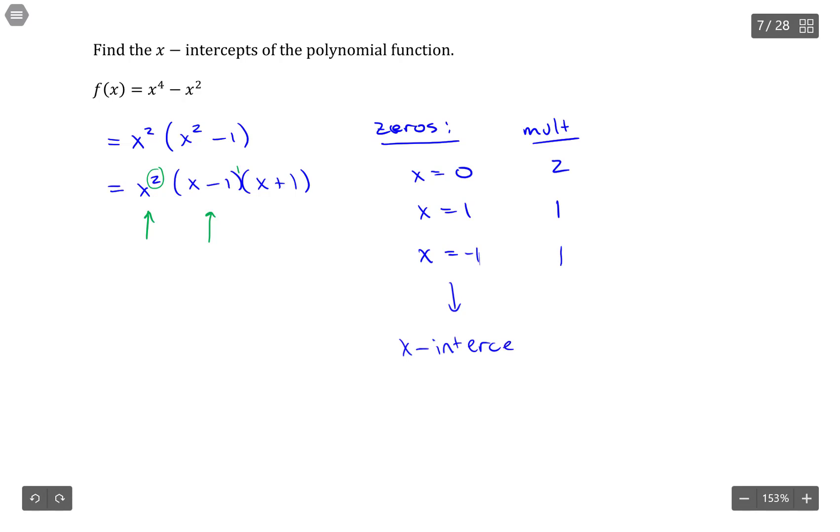If we had had any solutions that were non-real, so they involved plus or minus i, those don't get counted as x-intercepts because they're not real values. Only real zeros qualify as x-intercepts.